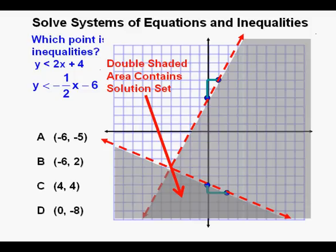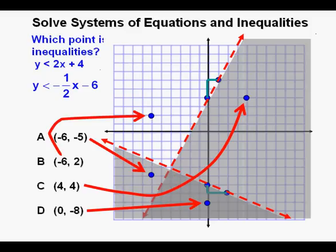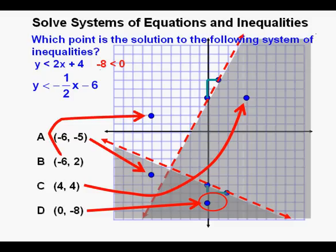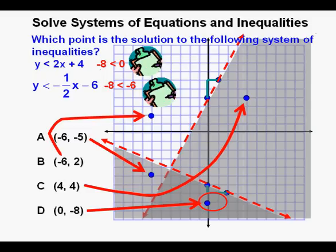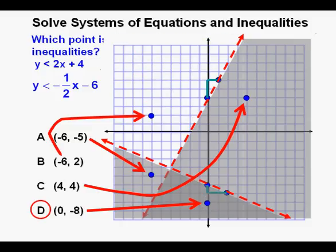Not a single solution as in the system of equations, but an infinite number of points within the shaded area, which extends infinitely downward and also some to the left and to the right. We plot all four points from our answer choices. It looks like the answer is at 0 comma negative 8. To check, we plug that solution into our first inequality and get negative 8 is less than 0 — that's true, check. Next we try the second inequality: negative 8 is less than negative 6 — yes, check. Since (0, −8) is the point inside the doubly shaded area, it's our correct answer, so we circle answer D.